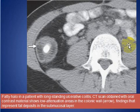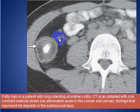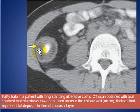Here we see another patient with the fat halo sign in a patient with ulcerative colitis. This is the lumen, and this is the fat deposition in the submucosa. We call this the fat halo sign.